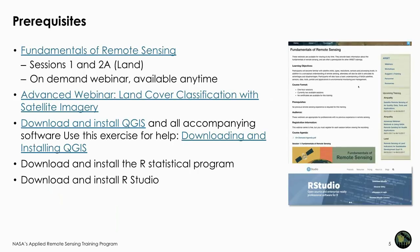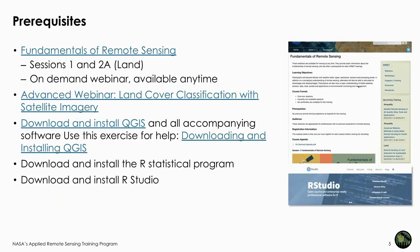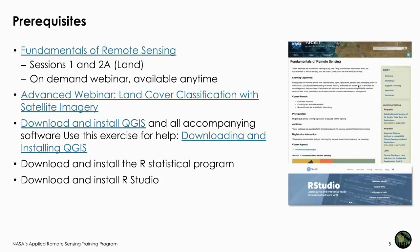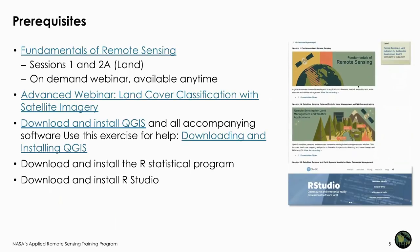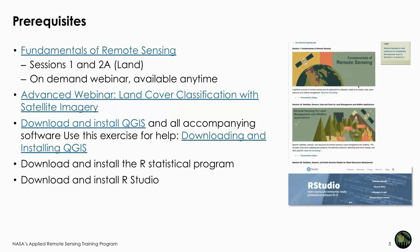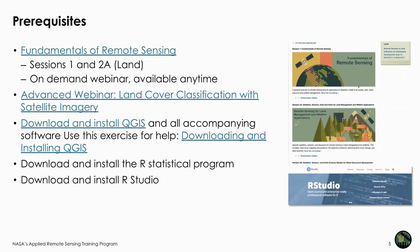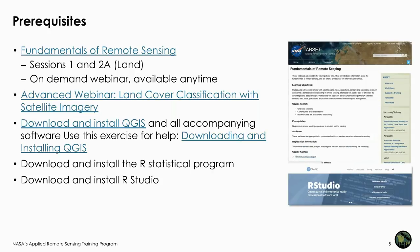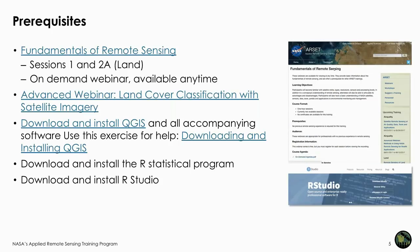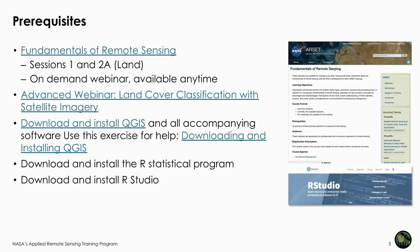There are several prerequisites for this course. The first is Fundamentals of Remote Sensing, which you can watch from our website anytime, or if you have equivalent experience from a class course on remote sensing, that works as well. We also advise that you take the advanced webinar on land cover classification with satellite imagery. You must also download and install QGIS and all accompanying software.